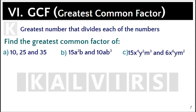The greatest common factor of a set of numbers is the largest factor shared by the group of numbers. In order to find the greatest common factor of a set of integers, we must multiply the prime factors that the integers have in common. For instance, in example A, all numbers are divisible by 5. Since 2, 5, and 7 have no prime factors in common, the greatest common factor of 10, 25, and 30 is 5.